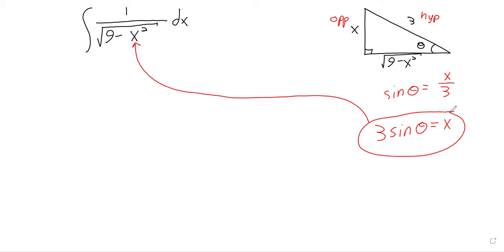Doing this is going to give us a trig function squared — it's also going to give us a 9, so there will be some work to do. But we seem to be on a path that might take us somewhere. This is very different from u-substitution, but one fact remains: you can't have your variable be theta and then have a dx there. Here we have to turn our dx into a d theta.